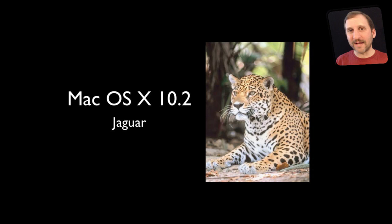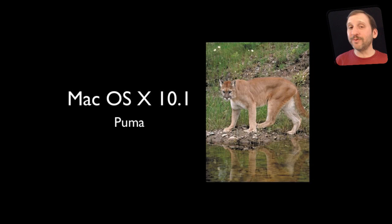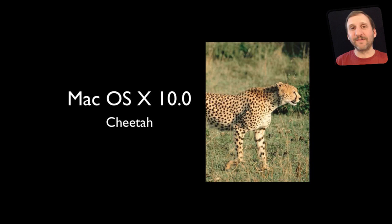But they became so popular in the press that Apple decided to go with them as part of their marketing. So before Jaguar we had Puma, but Puma was never actually used as an official name for Mac OS 10 at all. Actually the original version of Mac OS 10 was Cheetah, and that was also just something used internally. As a matter of fact the beta version of Mac OS 10 before Cheetah was known as Kodiak — referring to a bear, not a cat.